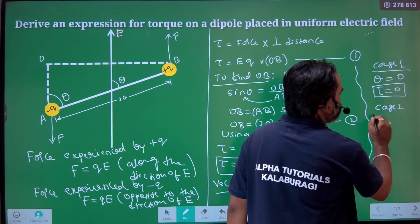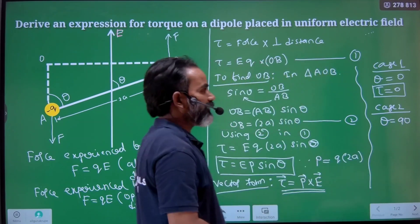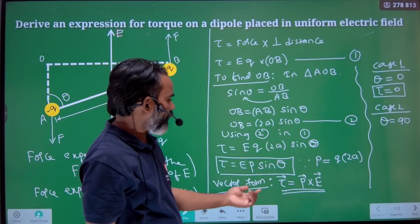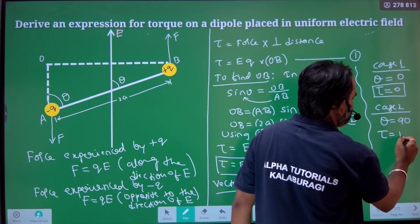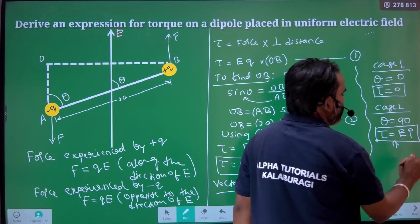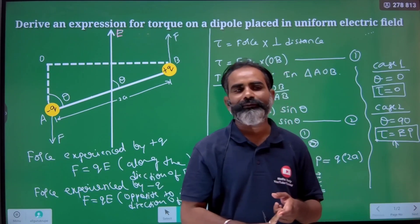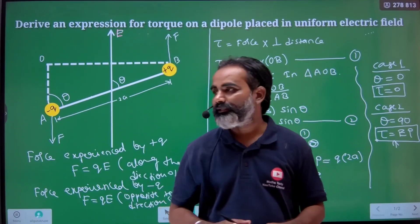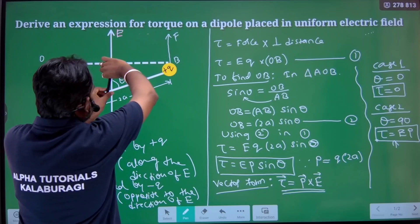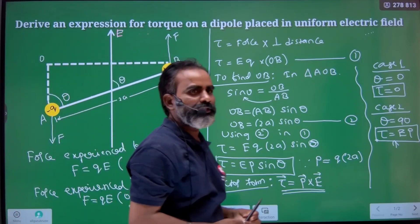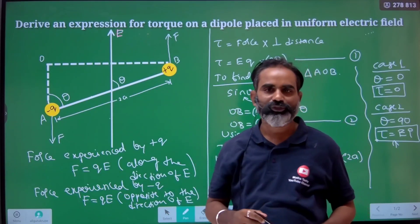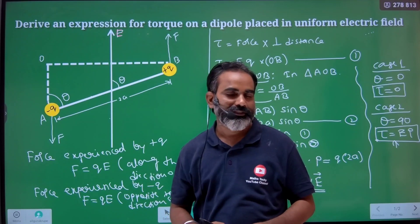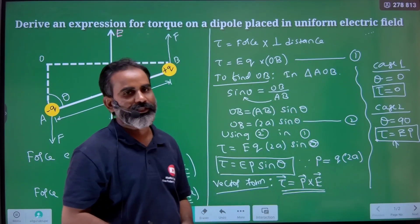Case 2: when the dipole makes an angle theta equal to 90 degrees with E. Then sin 90 equals 1, so tau equals pE — it is maximum. Also, when theta equals 180 degrees, the torque will again be 0, but that is an unstable equilibrium. Even a small external force will disturb it and it will rotate back.